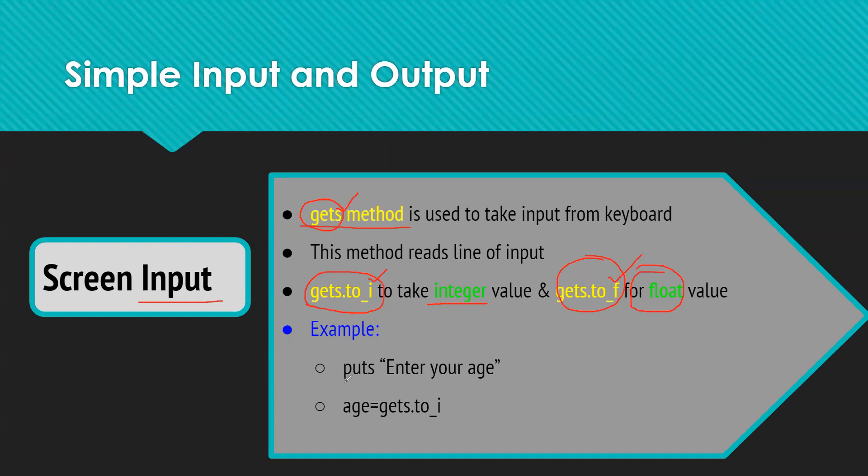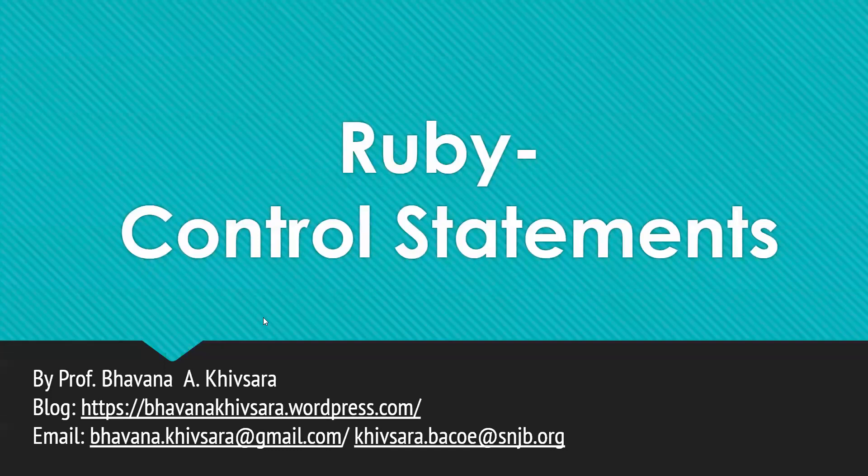So here, suppose you have given a message as puts 'enter your age', and you want to take a value of age from user in the form of integer. So you will use here gets.to_i method. So whatever the value user has given, it will consider it in a form of integer, and we have to store that value in a variable. So just use the variable name equal to this value, and your value, whatever the user has given, will be stored in a variable.